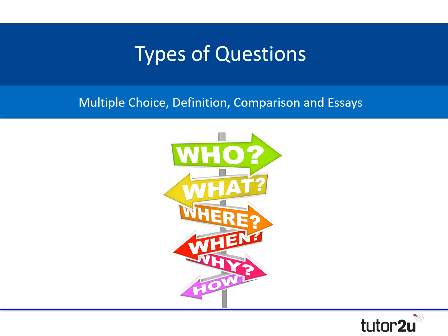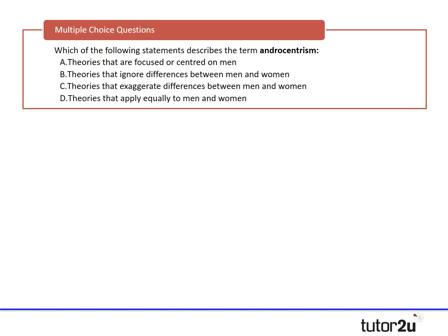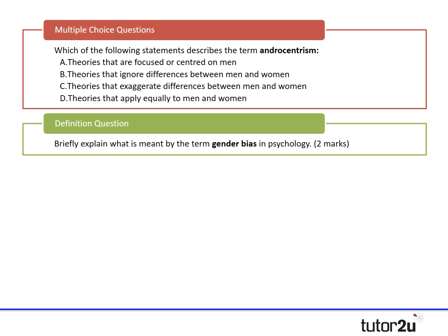Let's move into the different types of questions that can occur in this unit. I've broken it down into four or five key types. The first and most simple is multiple choice questions — you often get one or two of these at the start of a topic, and they can actually be quite tricky. Then there's what I would call the definition type of question, for example: 'Briefly explain what is meant by the term gender bias.'